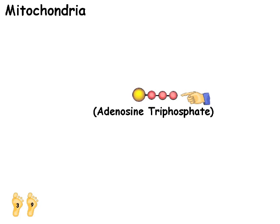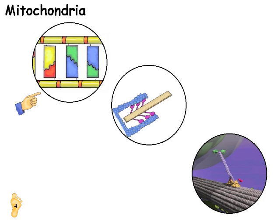The energy is released when the last phosphate molecule is snapped away. Most of the cell's molecules are machines requiring batteries. The DNA segments are bound together by batteries. The muscles are powered by batteries. We have seen how the transporters use them.